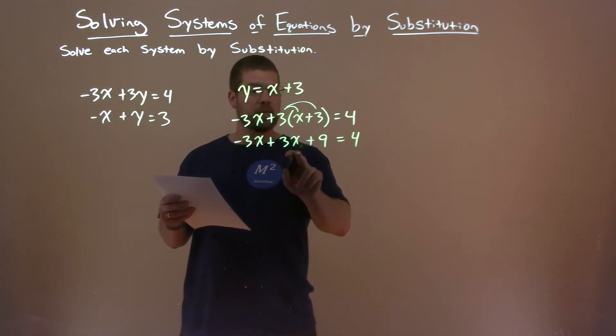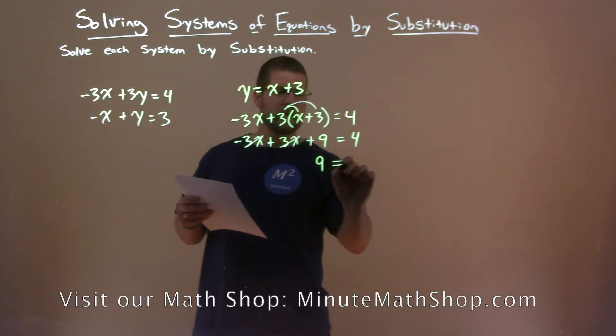Alright. Minus 3x plus 3x is just 0x. They cancel each other out. And we're left with 9 equals 4.